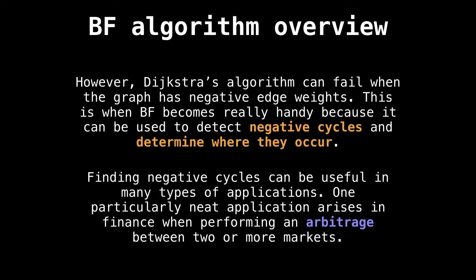A neat application of Bellman-Ford and negative cycles is in finance and economics when performing an arbitrage between two or more markets. This is when prices between different markets are such that you can cycle through each market with a security, such as a stock or currency, and end up with more profit than you originally started with, essentially getting risk-free gains.